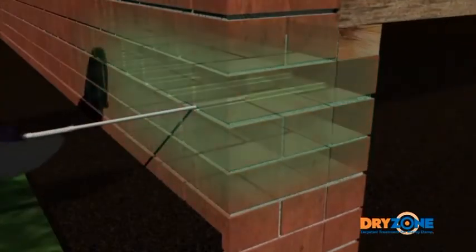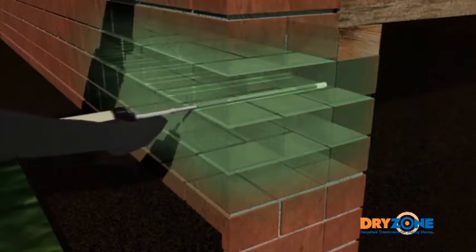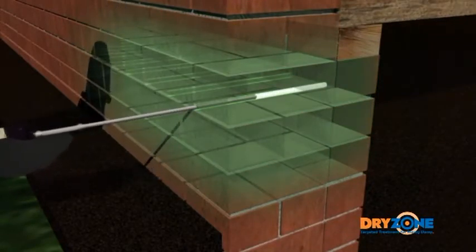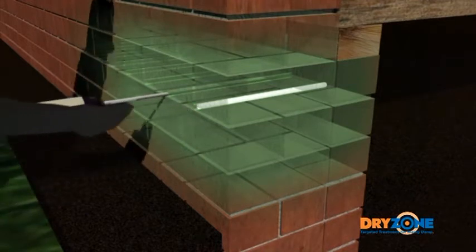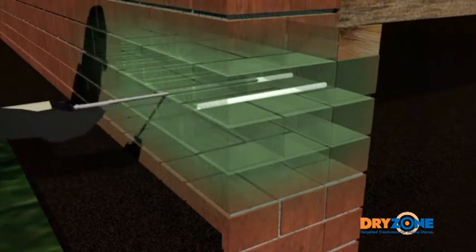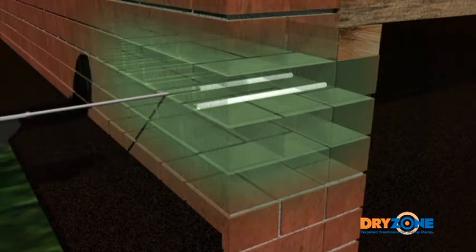The delivery tube should be inserted the full depth into the pre-drilled hole, and the gun trigger gently squeezed, back-filling each hole to within one centimetre of the surface. Externally drilled holes should be either plugged or pointed over after application.